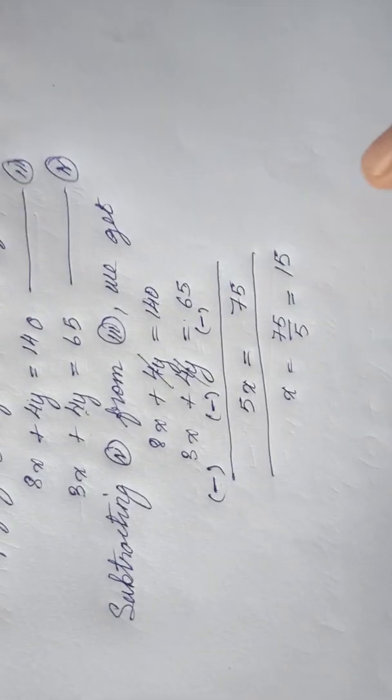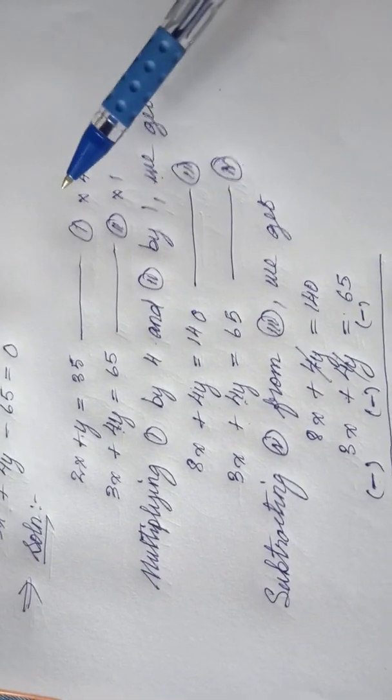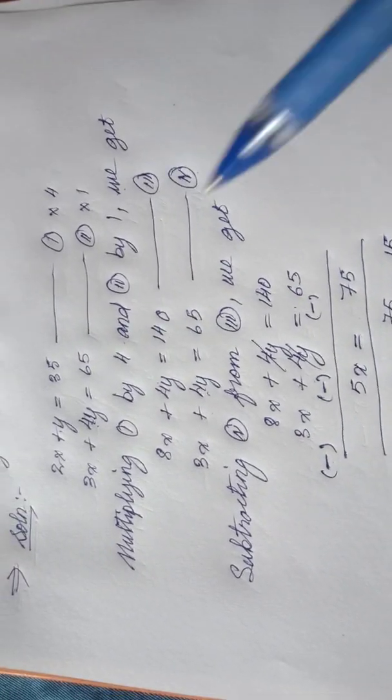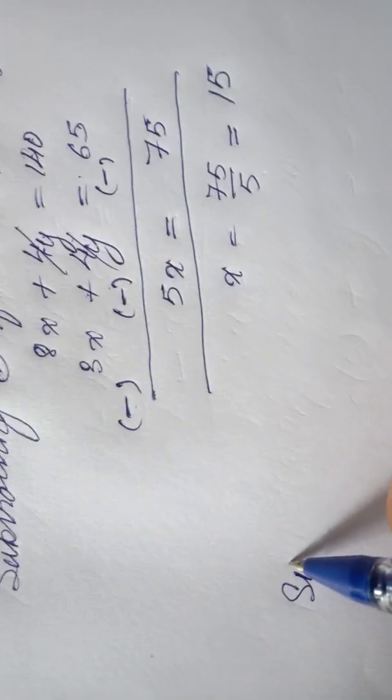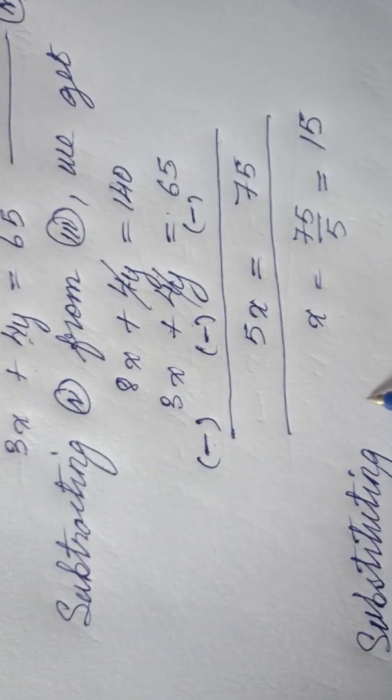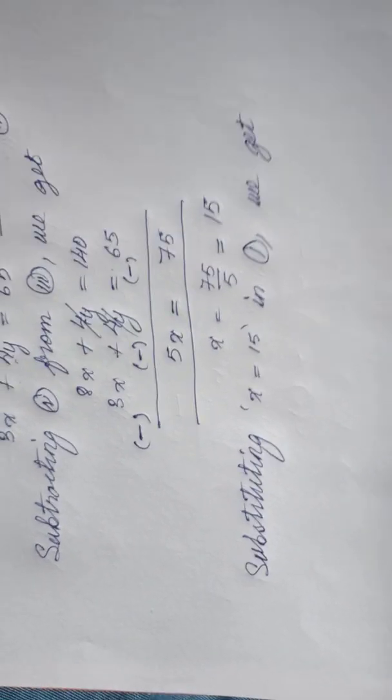To find the value of y, I can use any of the 4 equations here. I will choose the simple one. As you can see, equation 1, 2, 3, and 4, equation 1 is the simplest. If you look at the terms, it is the simplest one. So I will target this as my next mission. I will substitute the value of x, that is 15, in equation 1, then I can find the value of y. Substituting x equal to 15 in equation 1, we get...